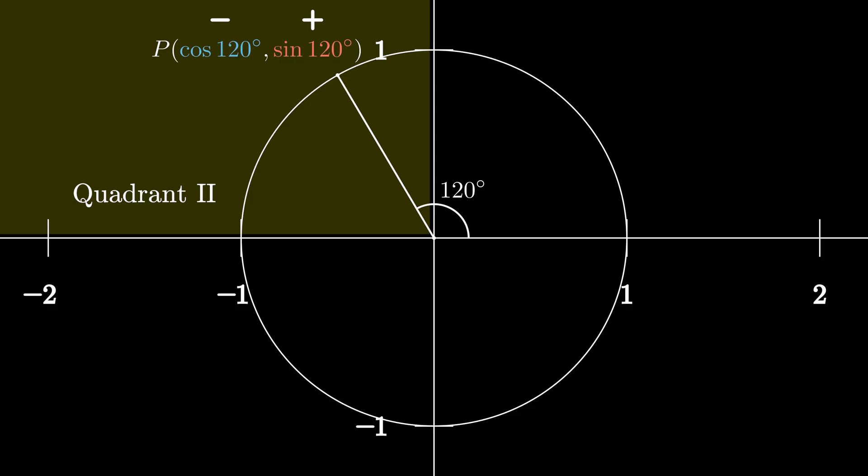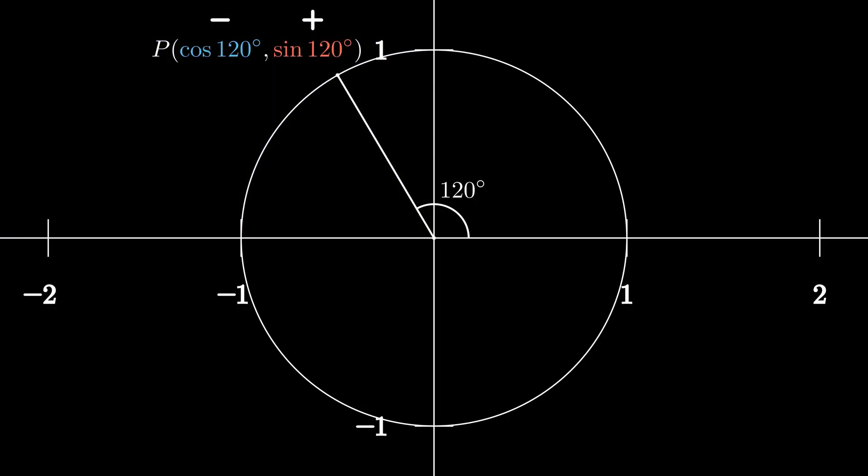Now you should notice that the sine and cosine are not always positive. Since we're in second quadrant where x values are all negative, cosine 120 degrees is a negative value. Then what about 225 degrees?